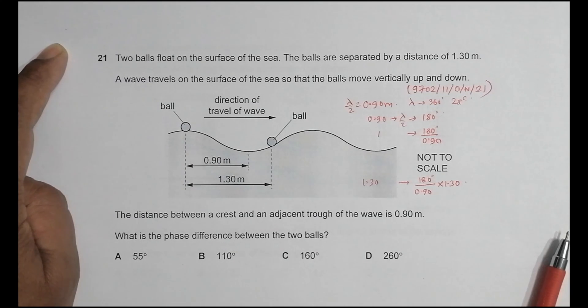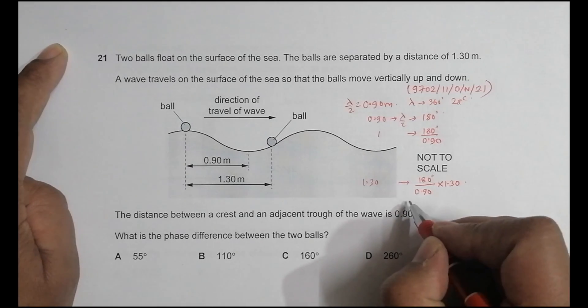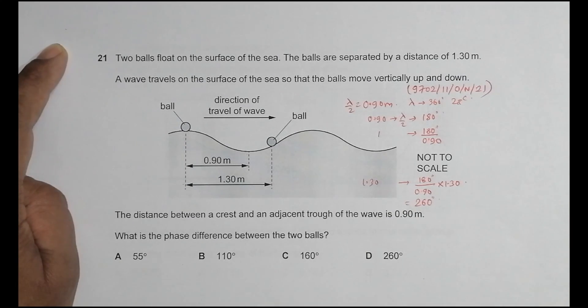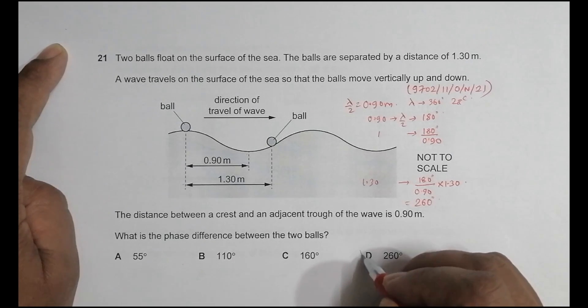So when I do this in calculator, it will be equal to 180 divided by 0.90 into 1.30 is equal to, yeah, it is 260 degrees. Equal to 260 degrees. And yes, it is easily available in choice number D here.